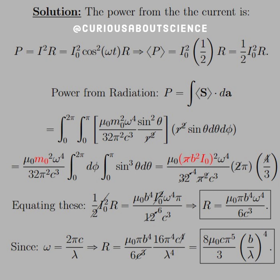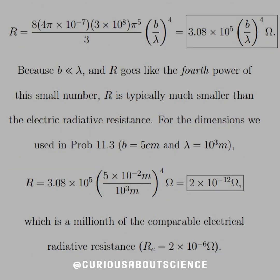Just be careful because it's to the 4th power. Alright, so once we have that expression, we're good to go. That's 8 mu0 C pi to the 5th over 3, and B over lambda to the 4th. Now we apply the constants, and we see that we get 3.08 times 10 to the 5, B over lambda to the 4th ohms.